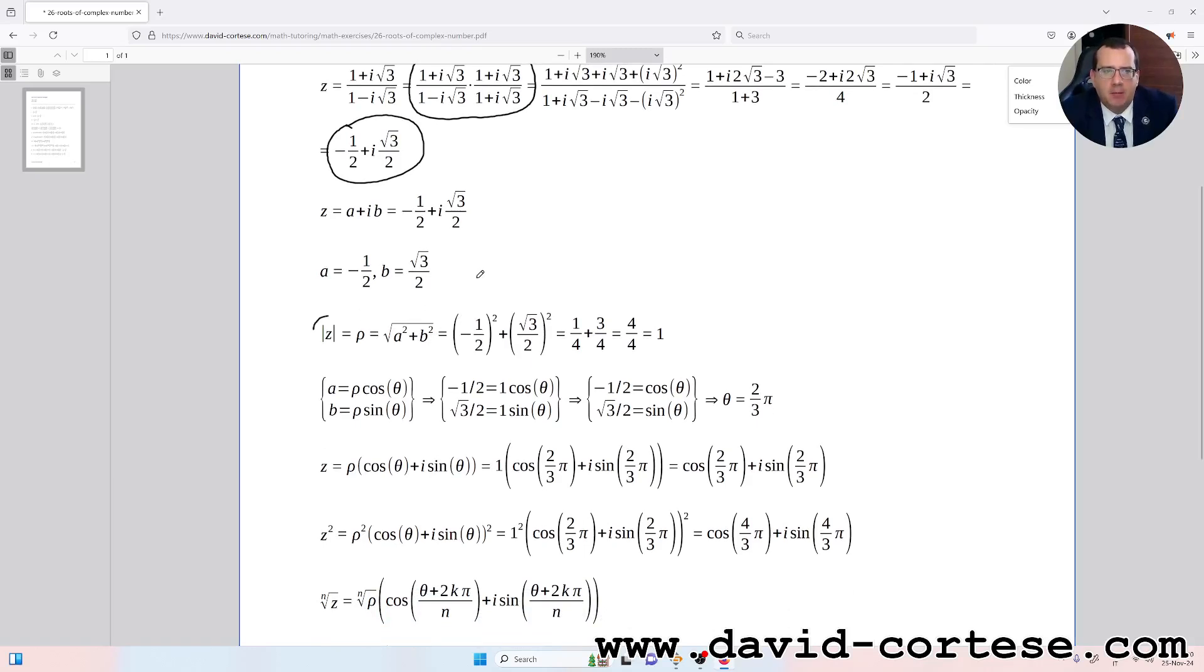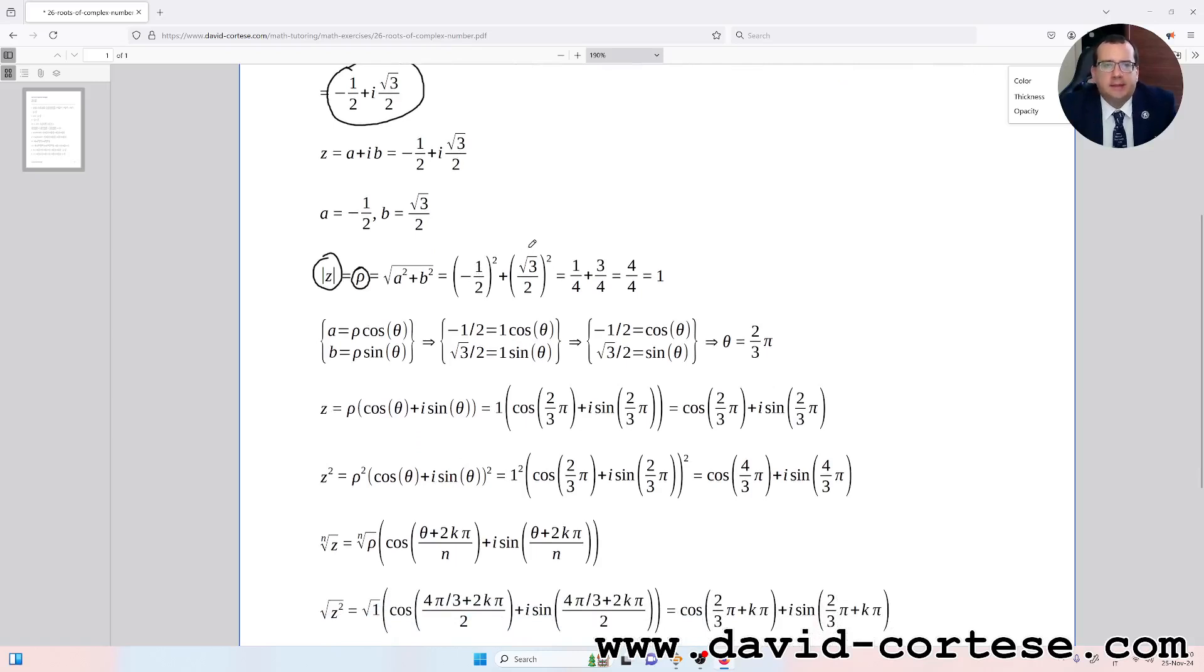The modulus, that we indicate also with this letter ρ, is √(a² + b²), which is 1. And we can solve the system: a = ρ cos θ and b = ρ sin θ. So -1/2 = 1 · cos θ and √3/2 = 1 · sin θ, so θ is 2π/3.